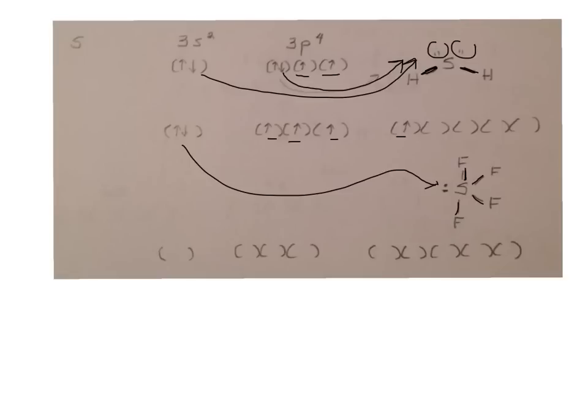But this electron can now get promoted up here. So now you have one here and these are all unpaired. Now you have a total of 6. This is sp3d2 hybridization. And this is how you form compounds like SF6. So sulfur can form this expanded octet because it can promote electrons into the third energy level.